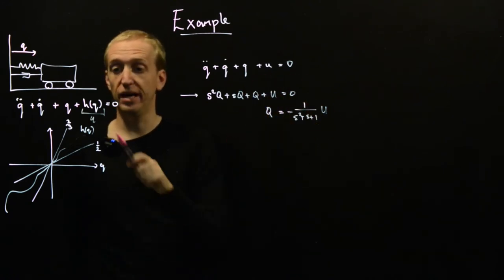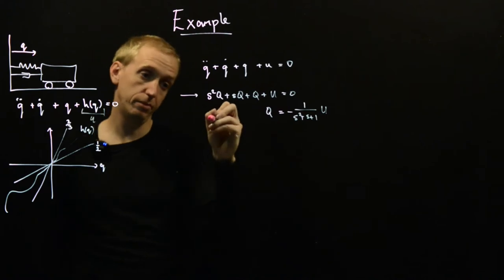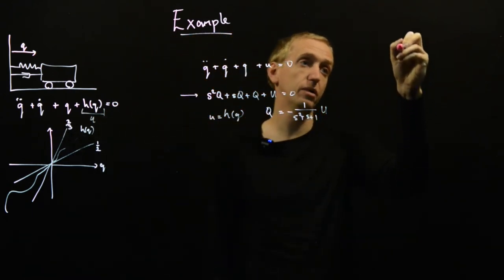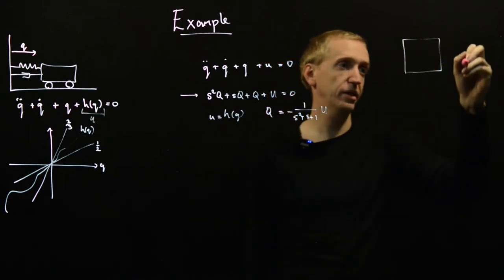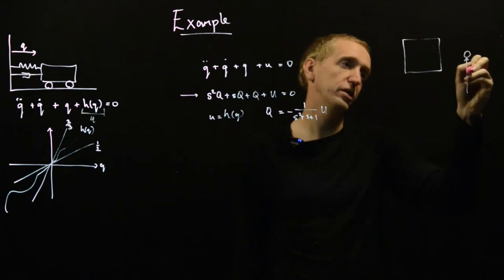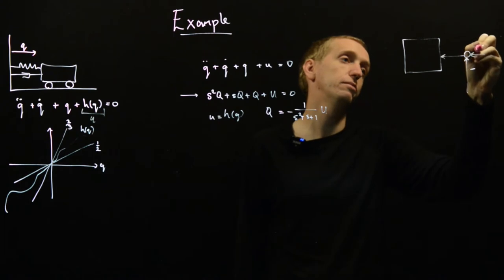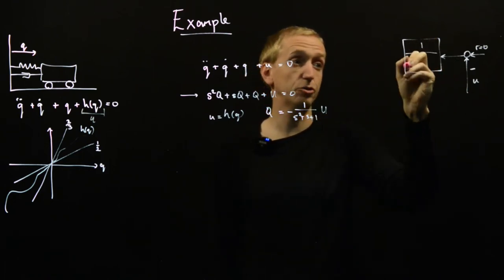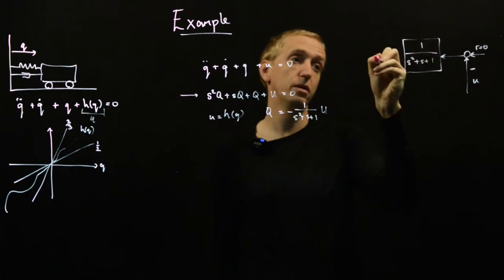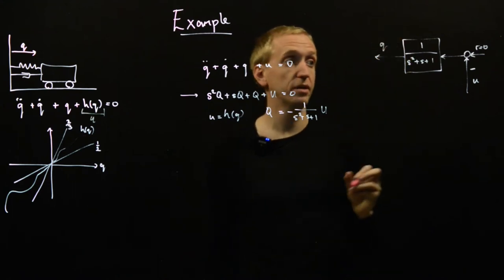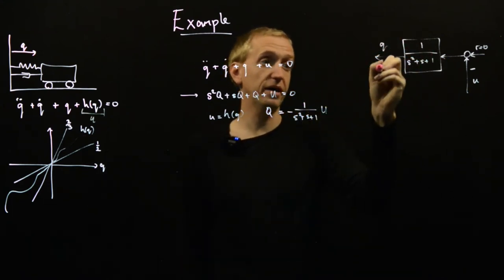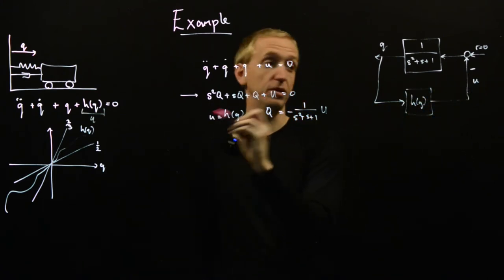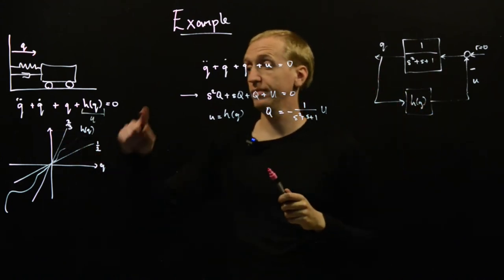So we have a linear term, and our nonlinear equation is simply U = h(q). Drawing this as a block diagram: using negative feedback convention, U goes through and becomes minus, then through our linear transfer function −1/(s² + s + 1), giving us q. That q is the input to our nonlinearity h(q), which specifies u. So this is a feedback representation of the system.